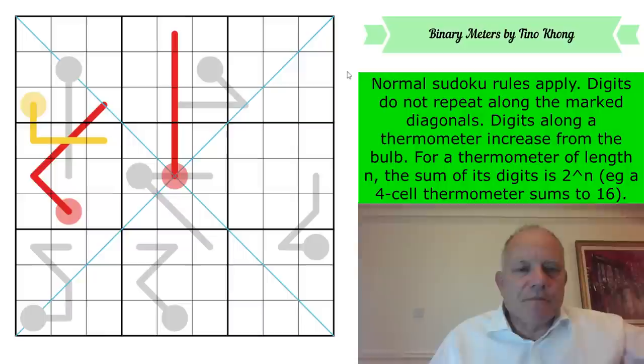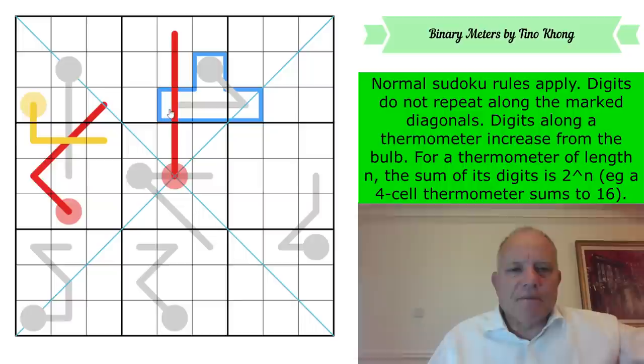Digits don't repeat on the marked diagonals. So along these blue lines, it's a set of one to nine again. Now we have some thermometers and some differently colored ones in this one. Digits along a thermometer increase from the bulb. That's normal enough. So this goes up from the bulb to the tip. For a thermometer of length n, the sum of its digits is two to the power of n. So for example, a four cell thermometer sums to 16.